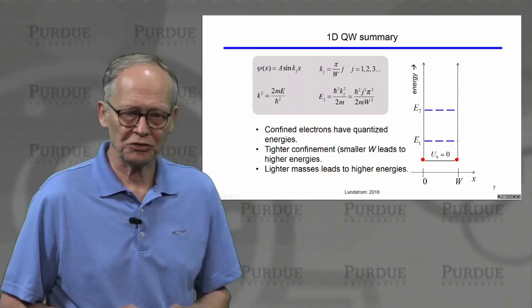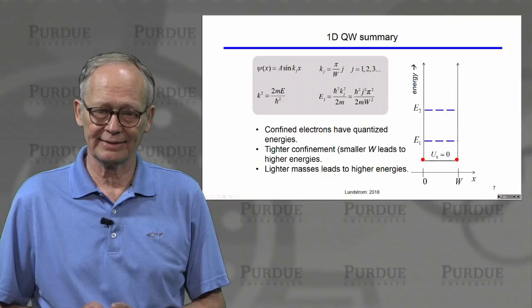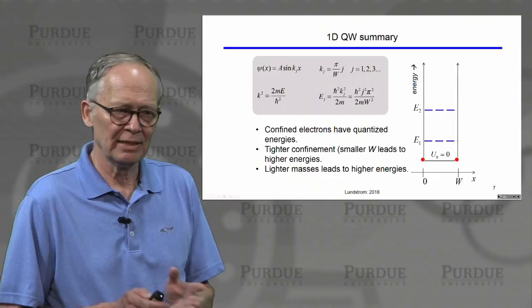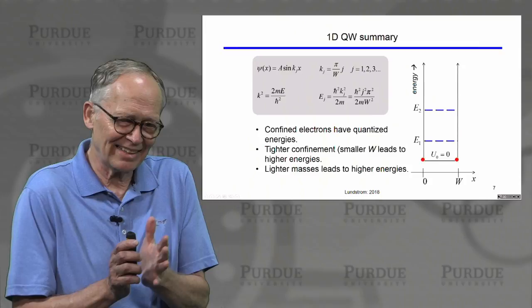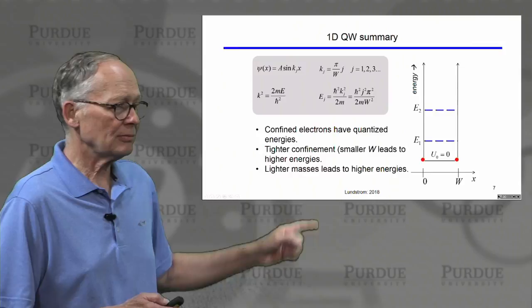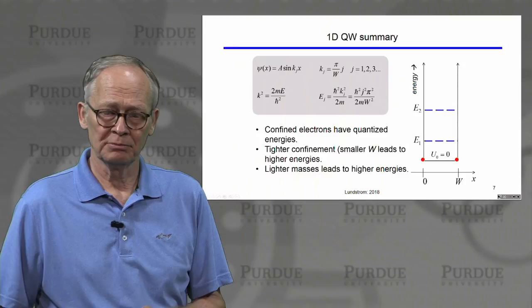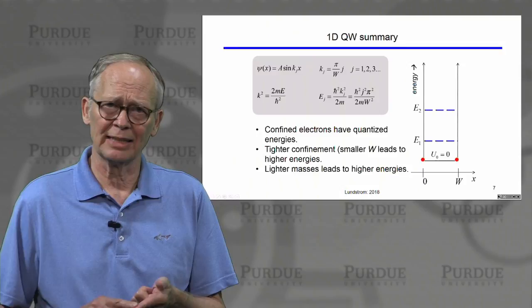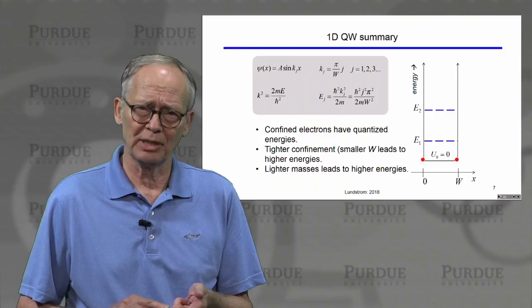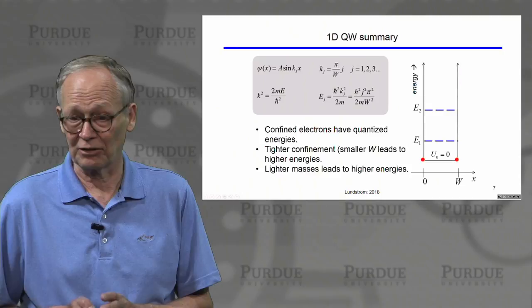To summarize: confined electrons have quantized energies. From our relation, the tighter we confine them - the smaller we make W - the higher those energies are. So if we have a very thin well, the energy states get pushed up. We can also see that if we have a light mass, we get higher energies. The effective mass of electrons in silicon is a little over one times the electron rest mass, but the effective mass of electrons in germanium is much lighter, so we would expect the energy levels to be much higher in gallium arsenide.